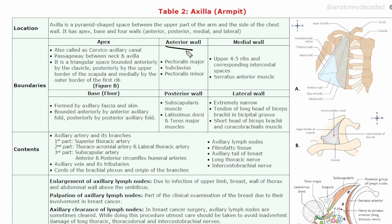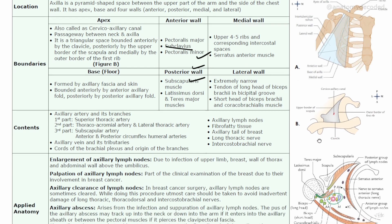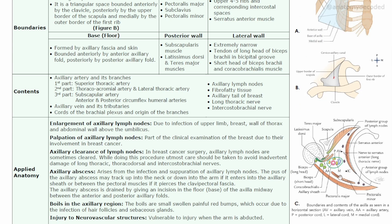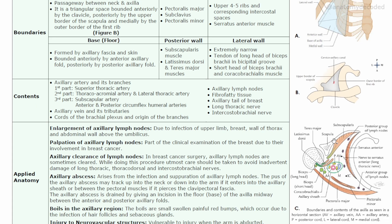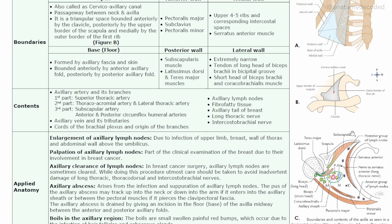The anterior wall of the axilla is formed by pectoralis major, subclavius, and pectoralis minor muscles. Looking at the horizontal section diagram at the level of the axilla, anteriorly we can see pectoralis major and minor muscles. Posteriorly, the posterior wall is formed by subscapularis, along with latissimus dorsi and teres major muscles.